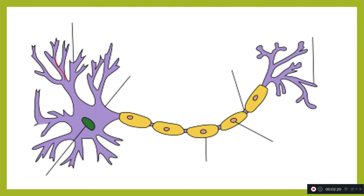Looking at the diagram, you can see small branches — elongations around the cell body. These hair-like structures are called dendrons, and the branches coming out from the dendron are called dendrites. The number of dendrites in a cell body may range from zero to more than 100. Dendrites receive stimuli from other nerves.